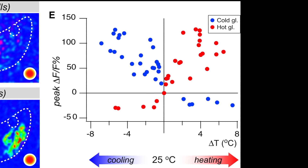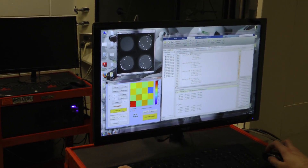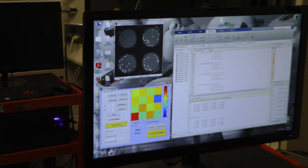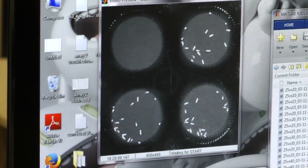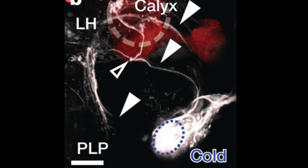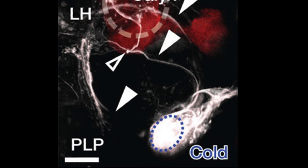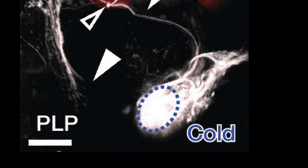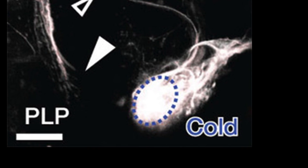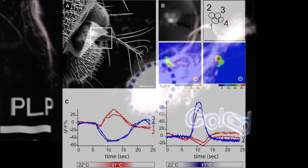For a fruit fly, both heating and cooling from the ideal temperature is actually quite dangerous, and they want to get away from it. When we silence these neurons — when we remove their activity — the flies lose their ability to avoid hot and cold. Interestingly, if we silence neurons that only respond to cold temperature, the flies only lose their avoidance to cold temperatures, not their avoidance to hot.